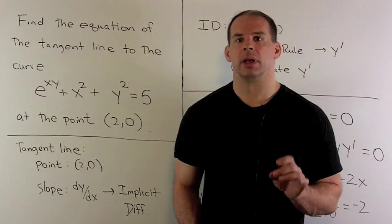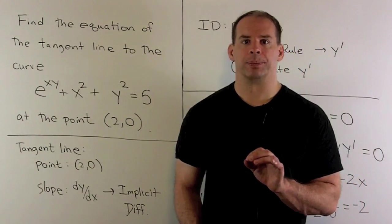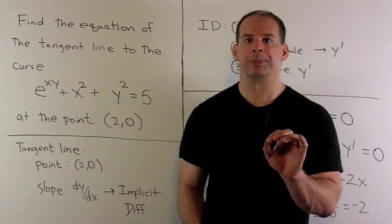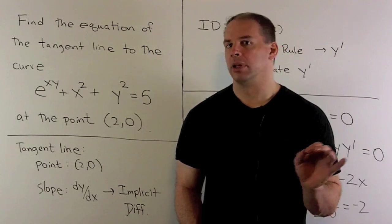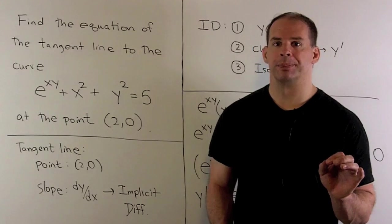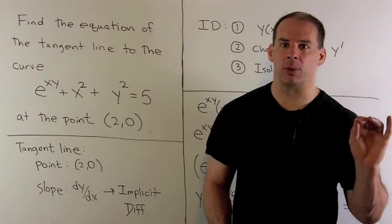How do I get a tangent line? Normally we start with a function, take its derivative, evaluate at our point of interest, that gives us our slope, and then we can go to the equation.